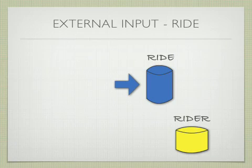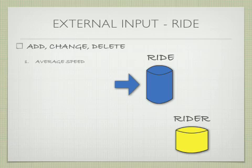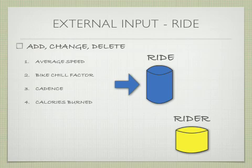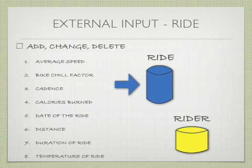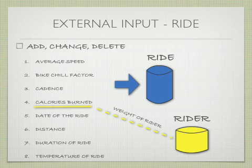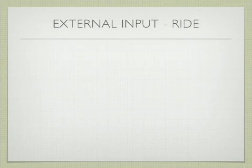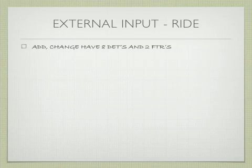The external input for Ride is a little bit more complex. It has eight data elements for the Add, Change, and Delete: Average Speed, Bike Chill Factor, Cadence, Calories Burned, Date of the Ride, Distance, Duration of the Ride, and Temperature. All these values are saved on the Ride file. What's interesting — and a little tricky — is that Calories Burned requires you to reference Rider to get the weight of the Rider to make the calculation. So the Add and Change have eight data elements and two FTRs.